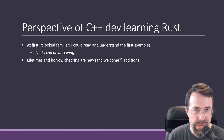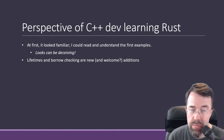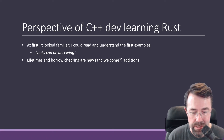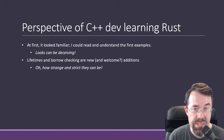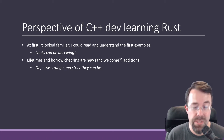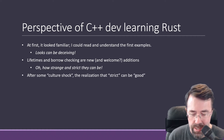Lifetimes and borrow checking were very new to me, but also kind of welcome additions in a certain sense, because I thought that the strictness of the language was very appealing — that if we can catch more mistakes at compile time, we won't have to find them at run time. How strange and strict they can be, though. I ran into a lot of compiler errors and didn't understand how to deal with them until I got more and more used to it. So after some culture shock, I had the realization that strict can be good.